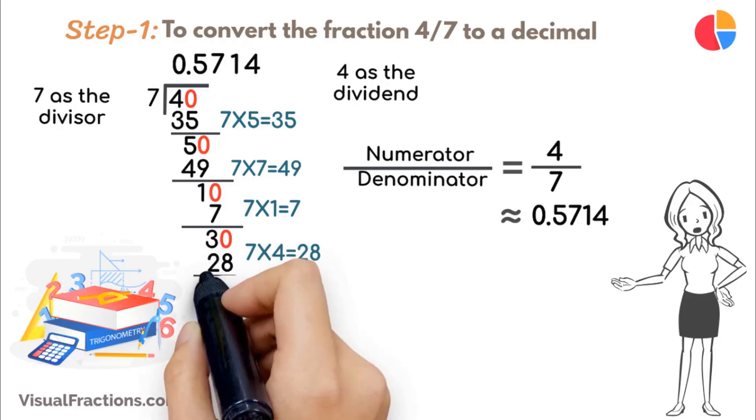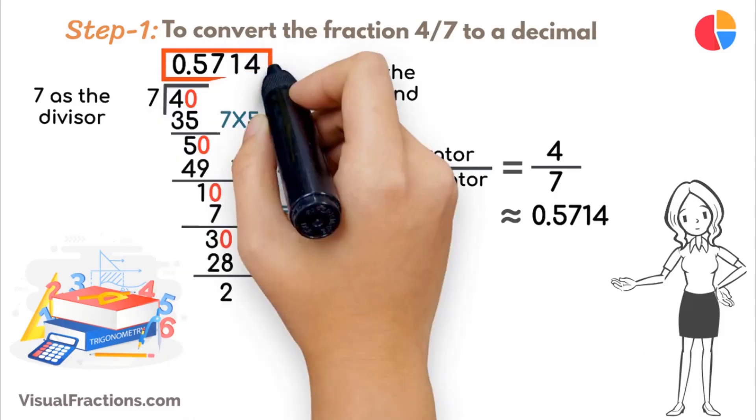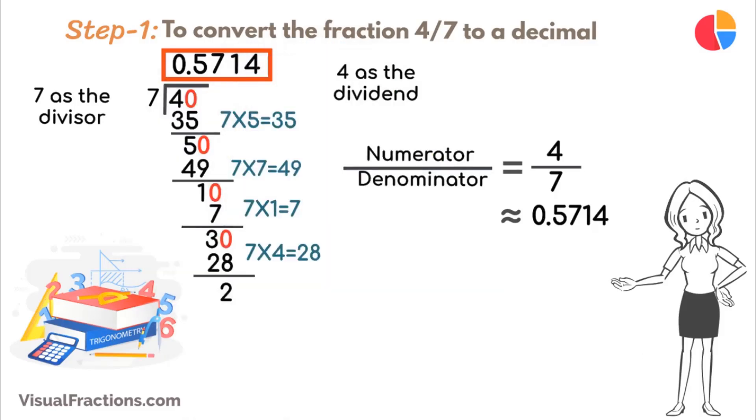As this process continues, consistently bringing down 0s, the sequence of remainders leads to a repeating pattern in the quotient. The digits 5714 begin to repeat, confirming the repeating decimal sequence.